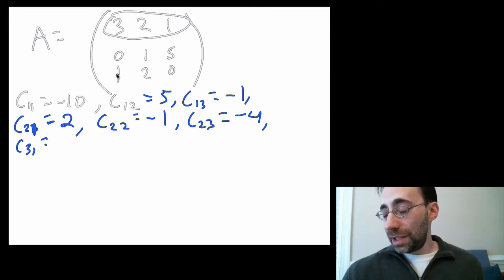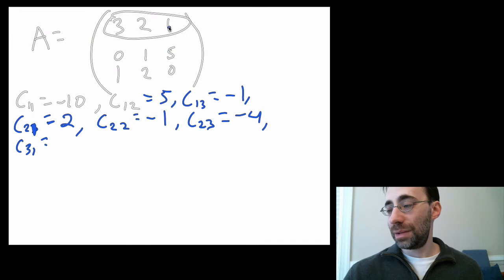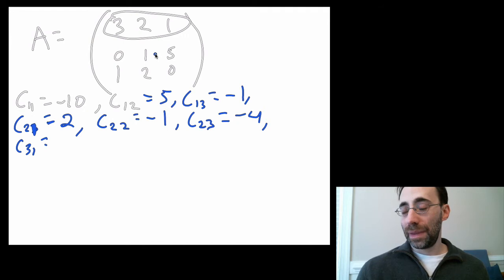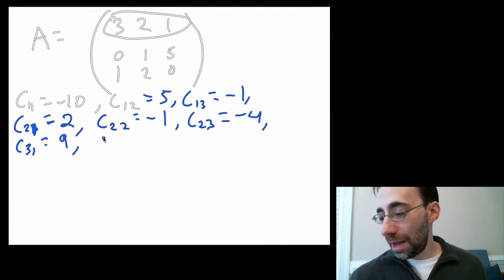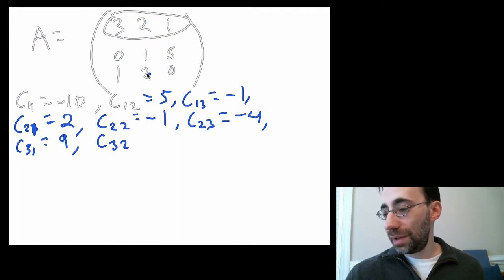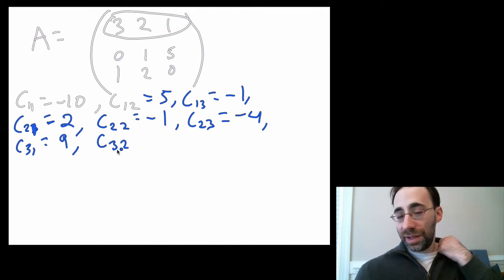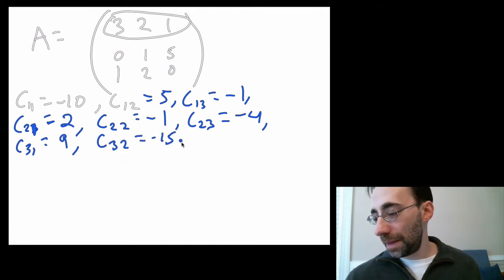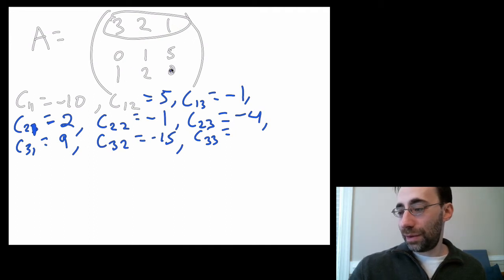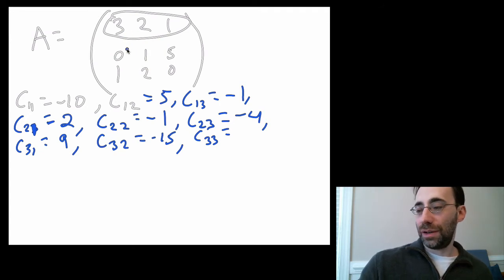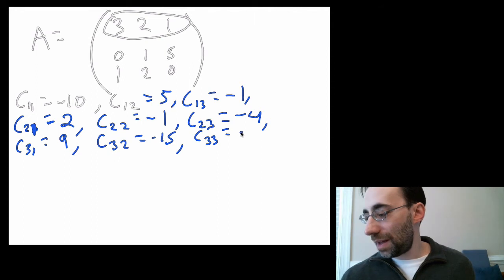Third row cofactors: C31: remove row 3 and column 1, leaving [2, 1; 1, 5]. Minor = 2×5 - 1×1 = 9. Sign for (3+1) is positive, so C31 = 9. C32: remove row 3 and column 2, leaving [3, 1; 0, 5]. Minor = 3×5 - 1×0 = 15. Sign for (3+2) is negative, so C32 = -15. C33: remove row 3 and column 3, leaving [3, 2; 0, 1]. Minor = 3×1 - 2×0 = 3. Sign for (3+3) is positive, so C33 = 3.